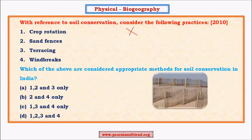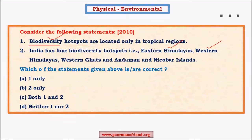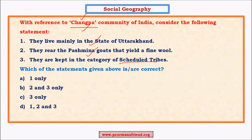This question is a little tough — in India we know about crop rotation, terracing, and wind breaks for soil conservation, but we don't have clear understanding about sand fences. These questions appear easy on the surface but carry greater risk. Such questions should be prepared in the later part of your preparation. Similarly, questions about names of tribes are tougher if you're not good at remembering facts — reserve these for the final stages.